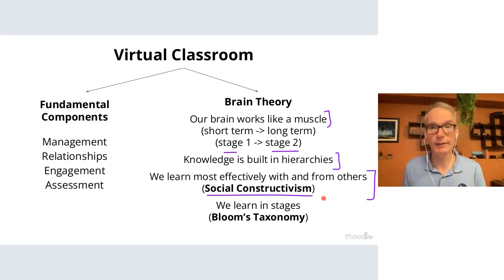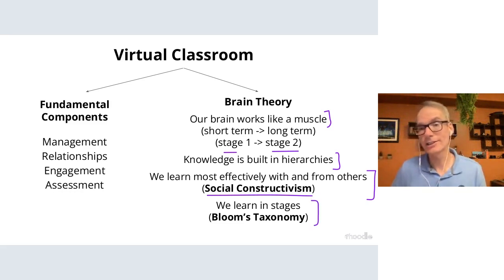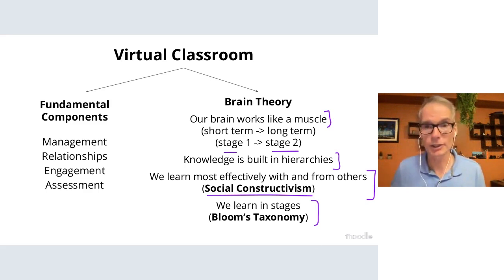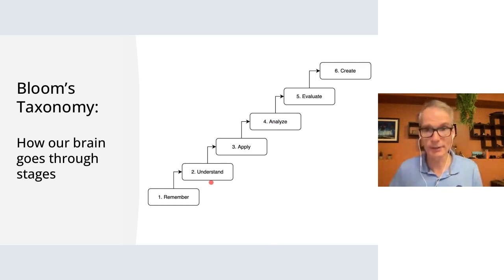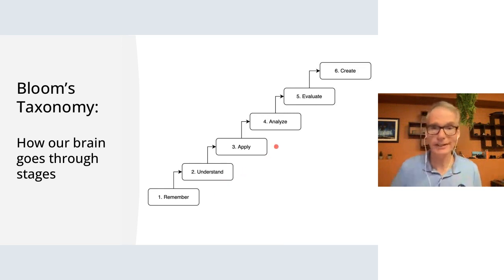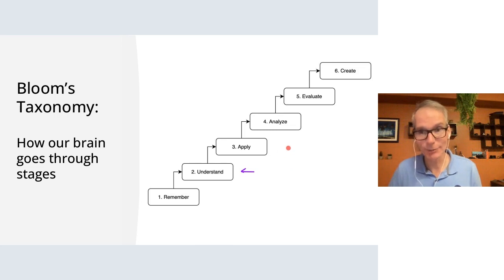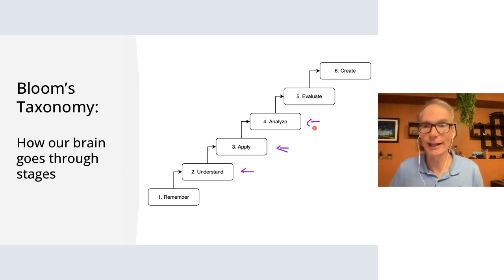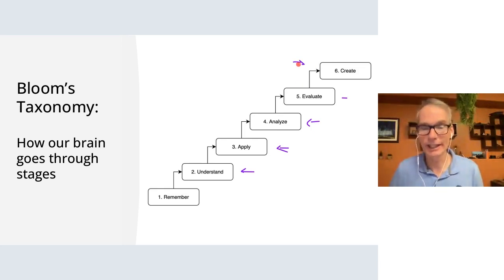We also learn in stages — Bloom's Taxonomy is well known and shows learning progresses through stages: remember, understand, apply, analyze, evaluate, and create. For example: I can remember what an apple is, understand the difference between a Macintosh and Golden Delicious, apply that by baking a recipe, evaluate whether it baked correctly, and finally create my own recipe. Everything builds on the previous stage.